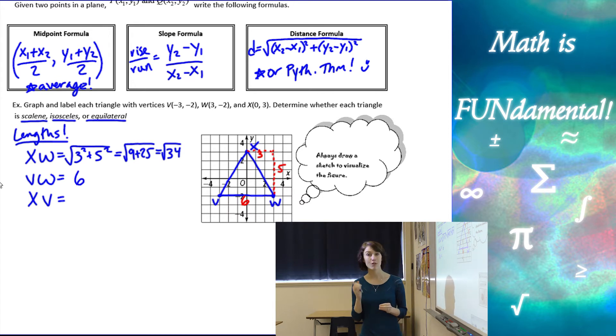Alright, so if you notice, I already can count out the equilateral triangle because the square root of 34 is not 6. And if we hadn't found these, we might have looked at the graph and thought it was equilateral. So that's why it's really important to actually find the lengths algebraically of your sides.